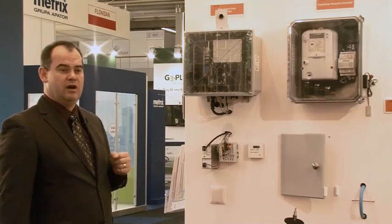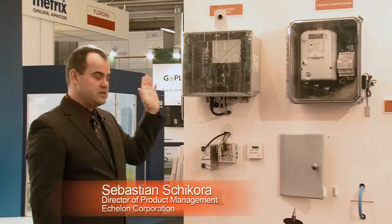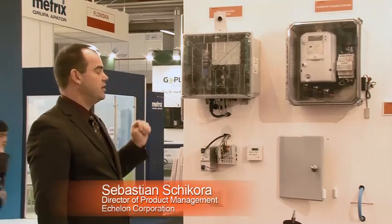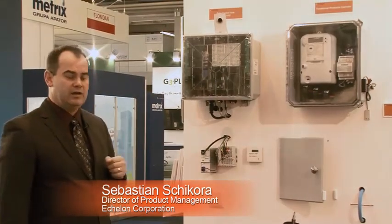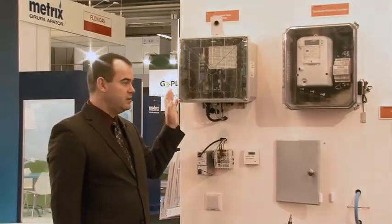Echelon provides two solutions for transformer protection. One is based on the ECN where the CTs as well as the sensors are directly connected to the ECN. Data is locally processed and only alarm information is passed on to the head end.